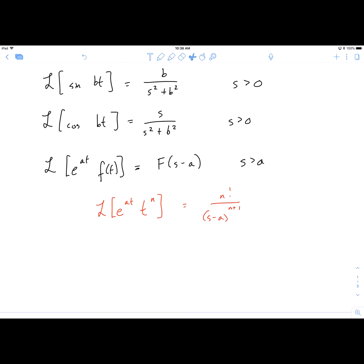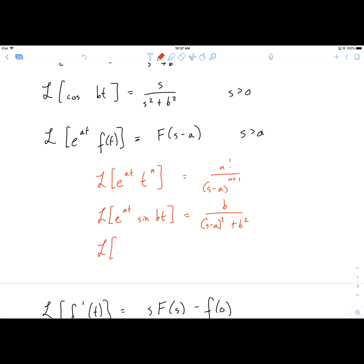Same thing with one of the trig functions. If you have e to the at times sine of bt, normally that would be b over s squared plus b squared without the exponential modifier. But since you do, all you do is take the s and replace it with s minus a. Same thing with cosine - instead of having s on top, you'll have s minus a, and same thing on the bottom.